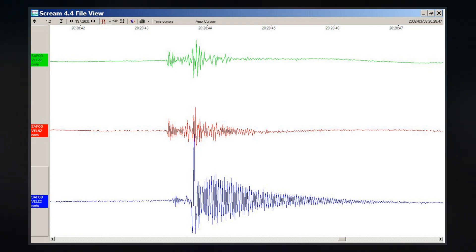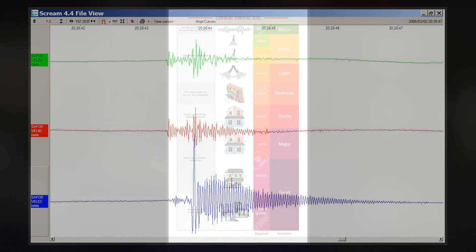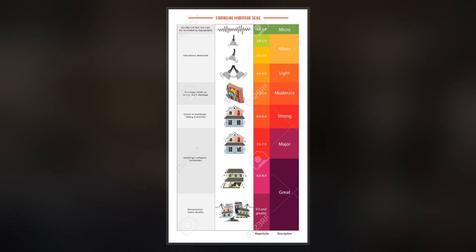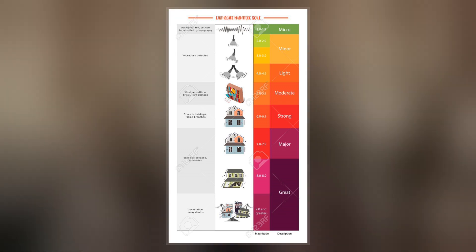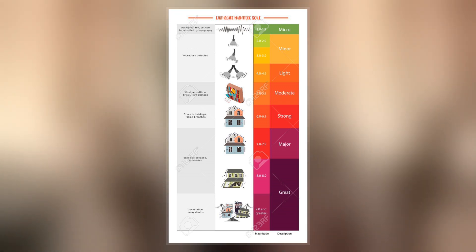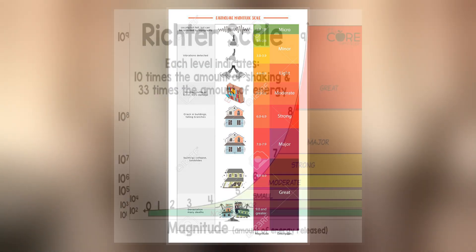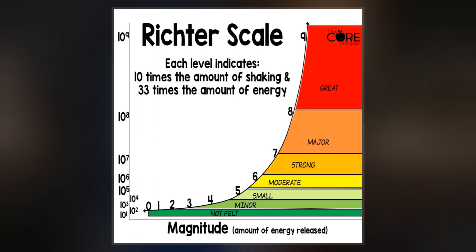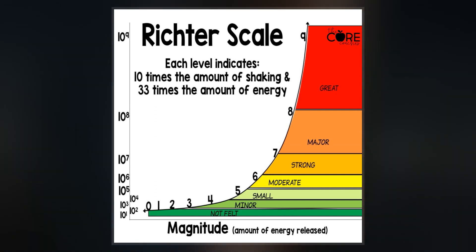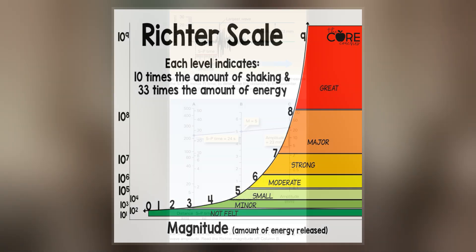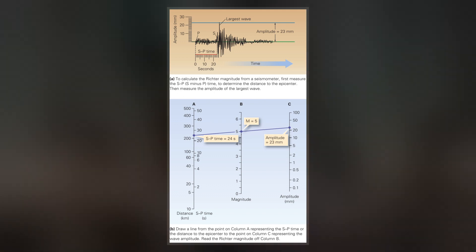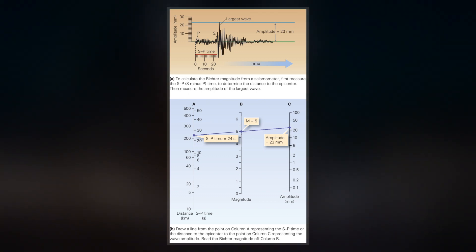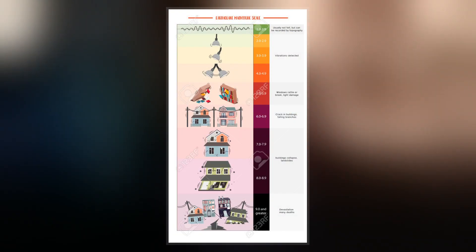All magnitude scales retain the logarithmic character of the original and are scaled to have roughly comparable numeric values. Prior to the development of the magnitude scale, the only measure of an earthquake's strength or size was a subjective assessment of the intensity of shaking observed near the epicenter of the earthquake, categorized by various seismic scales such as the Rossi-Forl scale.